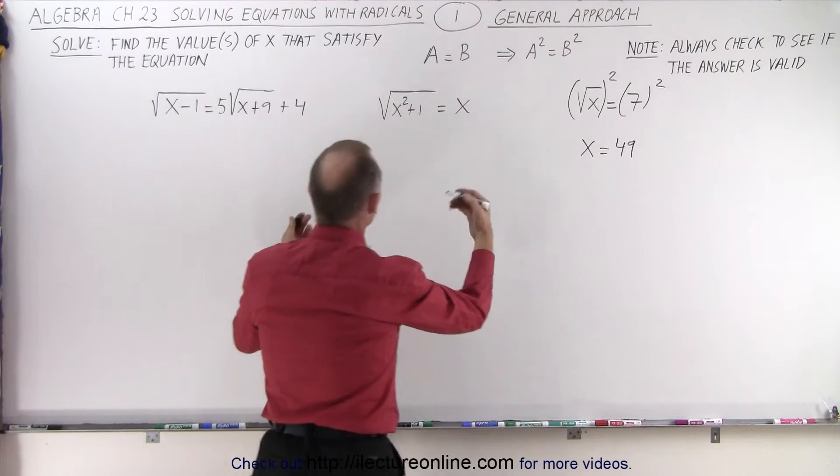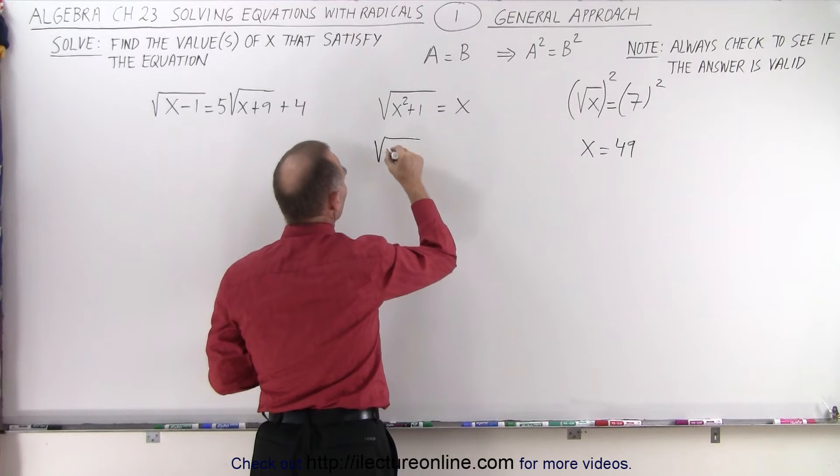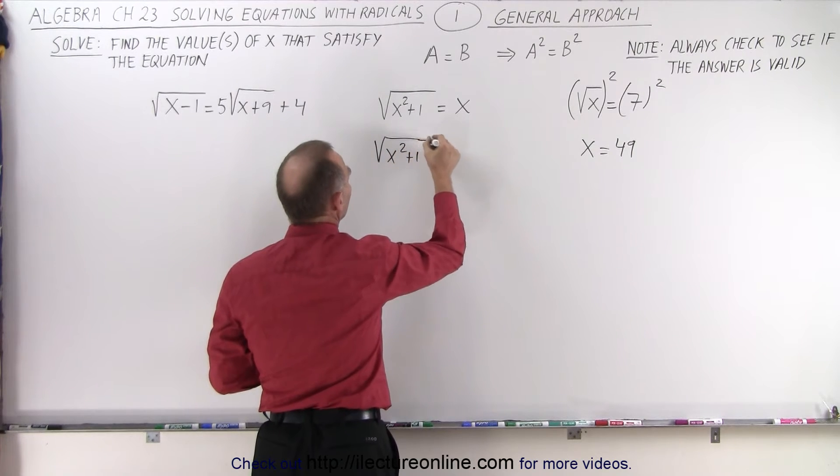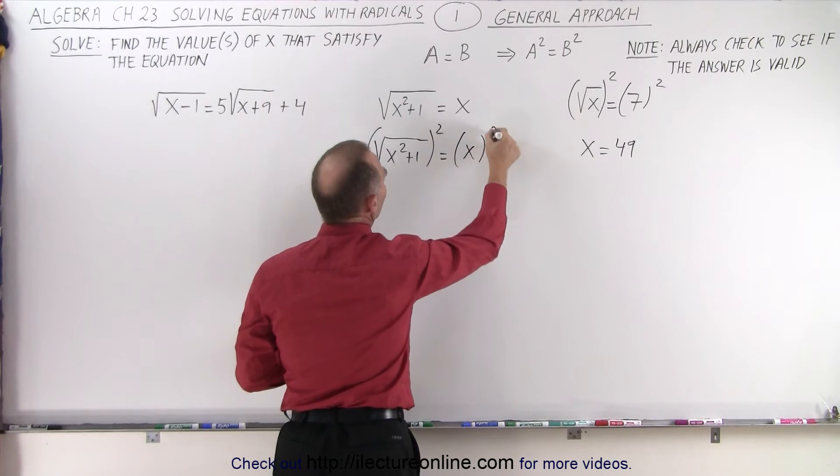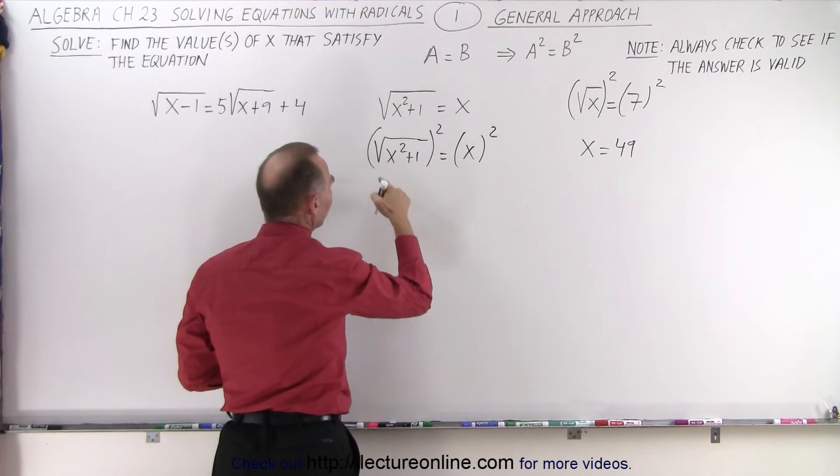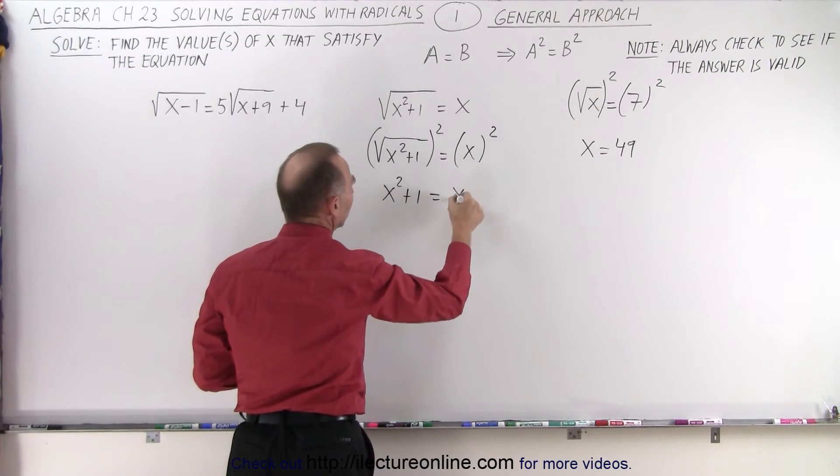We do the same over here - square both sides. In this case, when we square the left side, x² + 1 in the radical, and square the right side, we get x² + 1 equals x².